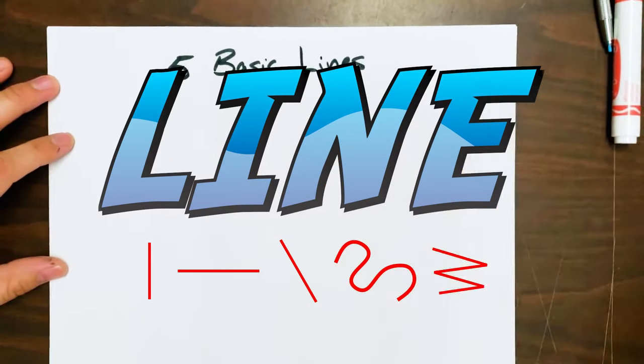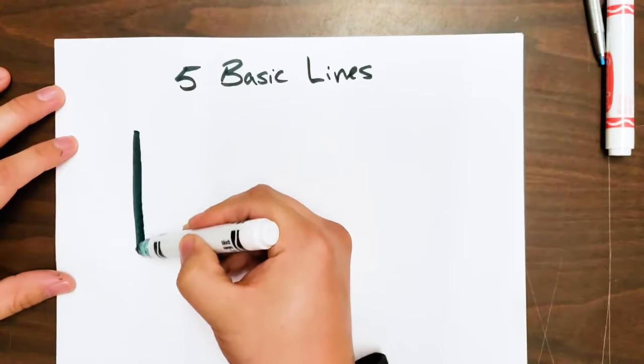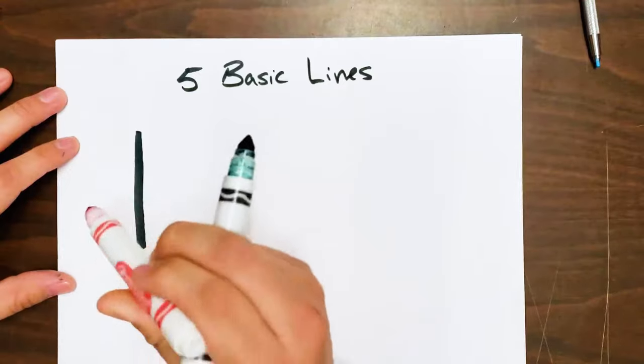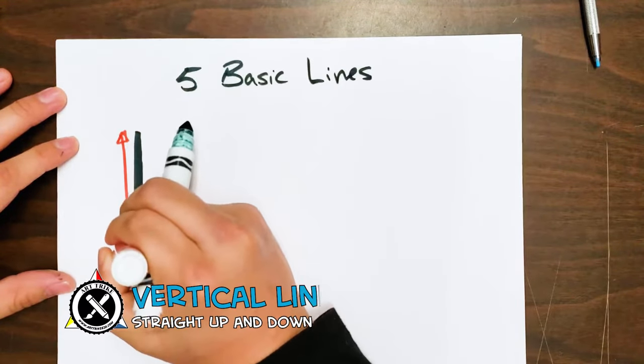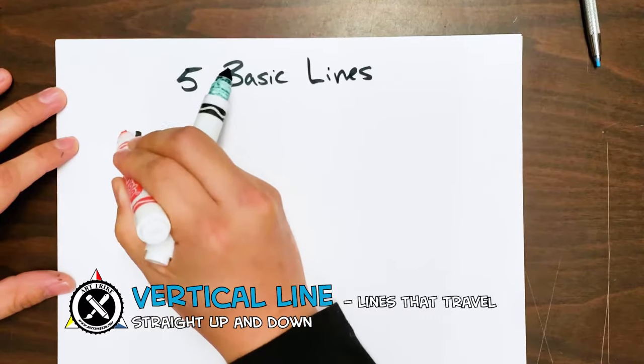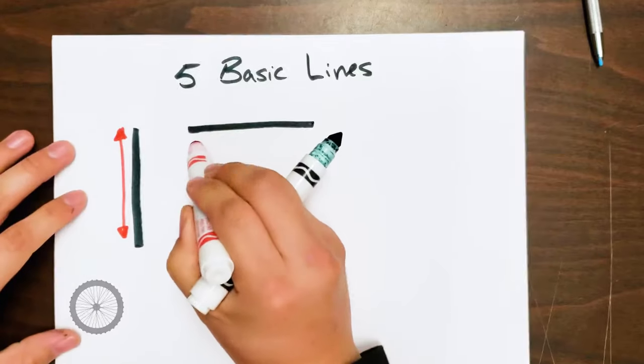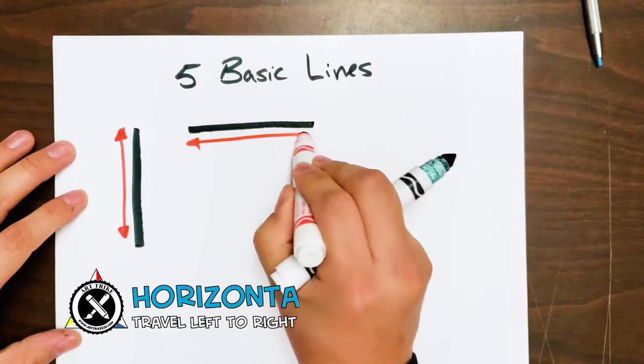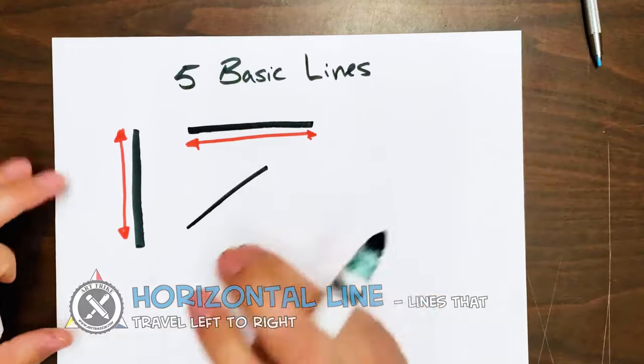Okay, so let's talk about lines. We have five basic lines, and the first one here is a vertical line. Vertical lines tend to go straight up and down, just like you see here. Then we have horizontal lines that go left and right.